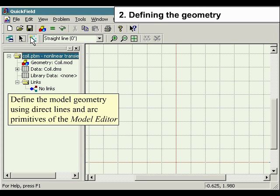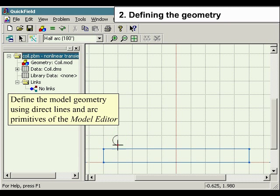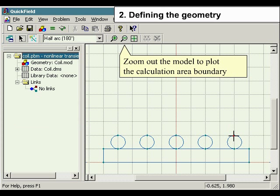Define the model geometry using direct lines and arc primitives of the model editor. Zoom out from the model to plot the calculation area boundary.